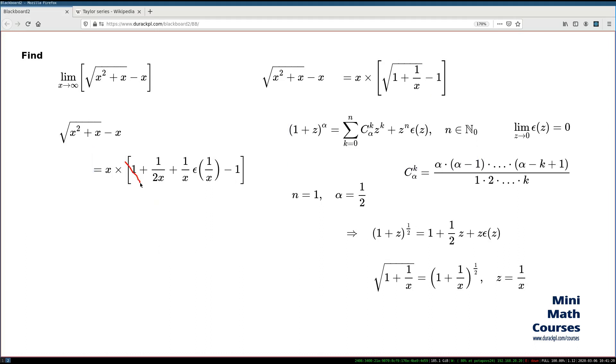Now we can cancel. We can cancel this one and this negative one. Then we can bring this x back inside this bracket. That will cancel x and x in here. So once you finish all of these cancellations the result will be as simple as 1/2, x is gone, and ε(1/x), this x is gone as well.